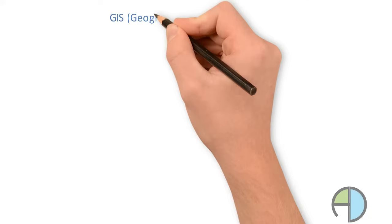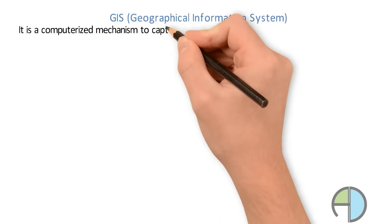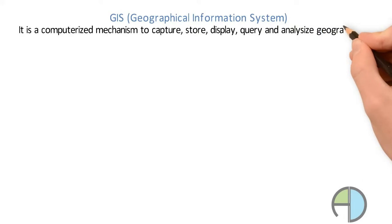GIS is an acronym for geographical information system. Academically, it is a computerized mechanism to capture, store, display, query and analyze geographic data.